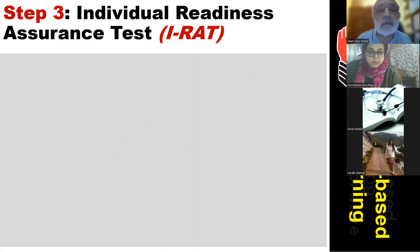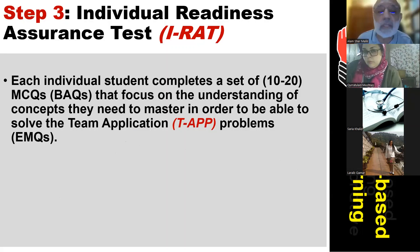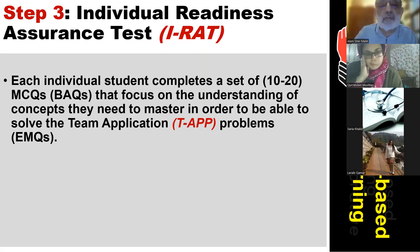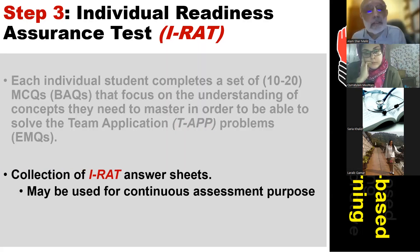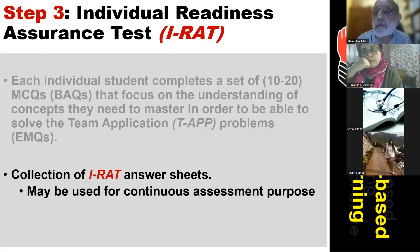The third step is the individual readiness assurance test. Each individual student completes a set of 10 to 20 single best answer questions that focus on understanding of concepts they need to master in order to be able to solve the team application problems. You can collect those answers from the students and use them as part of continuous assessment.